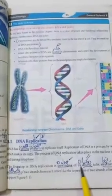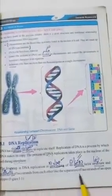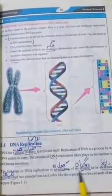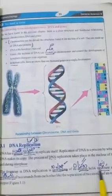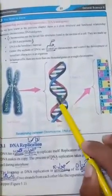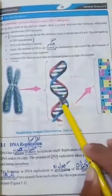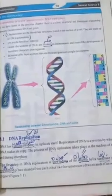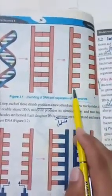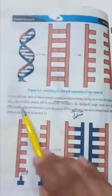The first step in DNA replication is unwinding of its double helix structure and separation of two strands from each other, like the separation of two strands of an open zipper. DNA apne double helix structure ko unwind kar deta hai, aur in dono strands ko ek dusre se alag kar deta hai — ek strand is side, doosra strand doosri side.